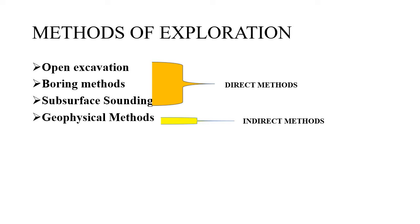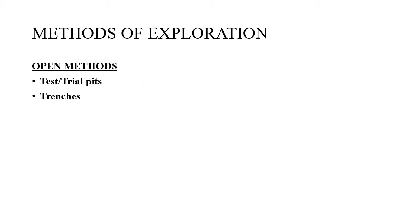Basically, in direct methods we will have to dig into the soil to understand the soil profile, whereas in indirect methods you do not have to necessarily take a borehole or dig into the soil to understand the change in soil strata. First we will cover open methods of exploration. In open methods of exploration, you have mainly test pits and trenches.